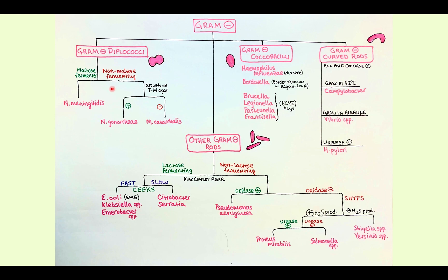Something that comes up again and again with gram-negative organisms is the agar — the growth agar. You need to know which agars grow which bacteria, or in other words, if you're looking for a specific bacterium, which agar do you use to culture it? You could easily get a question where it's abundantly clear what the organism is — they give you a patient with meningitis who develops a rash and their blood pressure drops, clearly describing meningococcal meningitis — and then they ask: is this a maltose fermenter? Does this grow on Thayer-Martin agar, chocolate agar, or MacConkey agar? You'll need to know all of these agars and what each organism ferments.